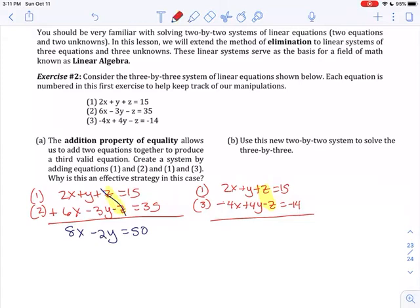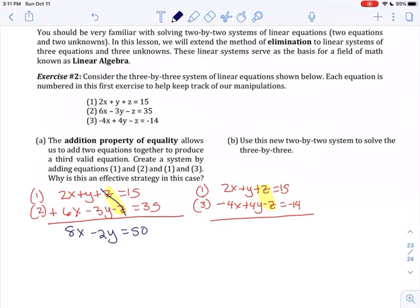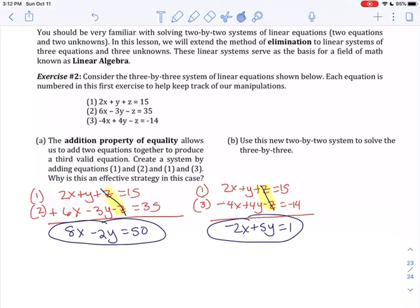Now I'm going to do the same thing with equation one and equation three. So equation one again is 2x + y + z = 15, and equation three is -4x + 4y - z = -14. Again, looking at those z's, the z's have the same coefficient. So if I add these, they will drop out. So I'm going to add them together. 2x - 4x is -2x, 4 + 4y is 5y, the z's cancel out, and 15 + -14 is 1.